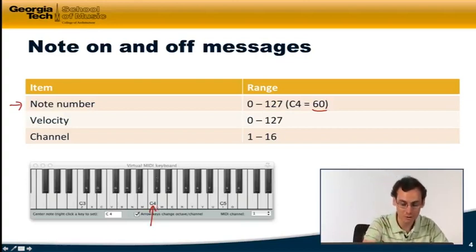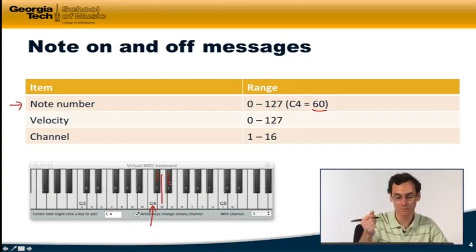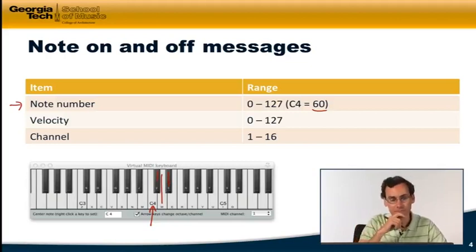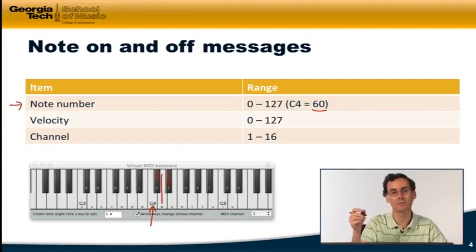This middle C on the keyboard. And then, so if I were to go to the C sharp here, that would be 61, 62 would be the D, 63 would be the D sharp and so on and so forth. These numbers - you'll see a lot of numbers in MIDI go from 0 to 127 because seven binary digits, seven bits, are being used to represent a lot of MIDI values.